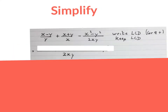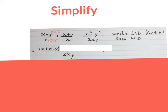You write the LCD and you keep the LCD — write your LCD and put a long line on top of it. Then you ask: with what do I times y to get to 2xy? You can see that is times 2x, so you also times 2x at the top. You write 2x bracket and put that bracket down.